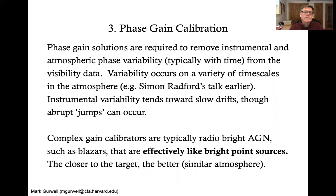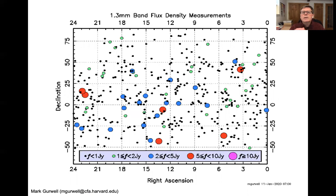So phase gain calibrations are required to remove both instrumental and atmospheric phase variability, which is typically time dependent from the visibility data. The variability occurs on a variety of time scales, particularly in the atmosphere. Simon Radford has a talk on this. Instrumental variability tends towards slow drifts, though abrupt jumps can occur. These can be caused by a variety of different reasons but they are typically just an abrupt change in the phase for no obvious occurrence in the data itself. Complex gain calibrators are typically bright AGN, they are often blazars, like bright point sources that work effectively like bright point sources. The closer to the target they are the better because the atmosphere is similar.